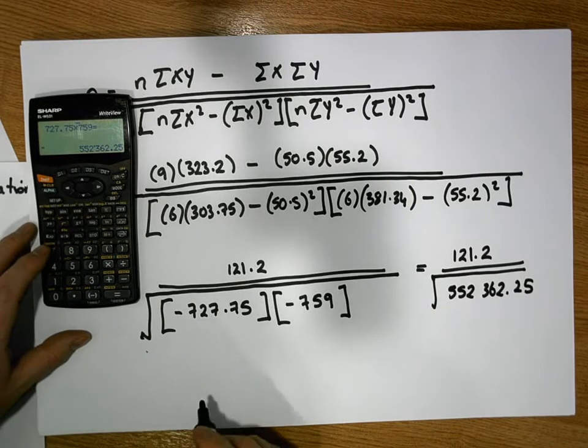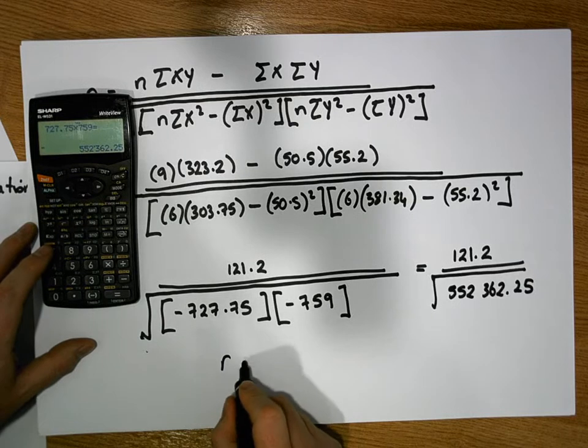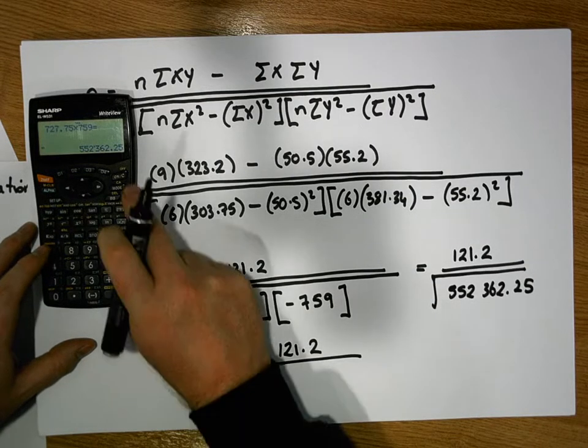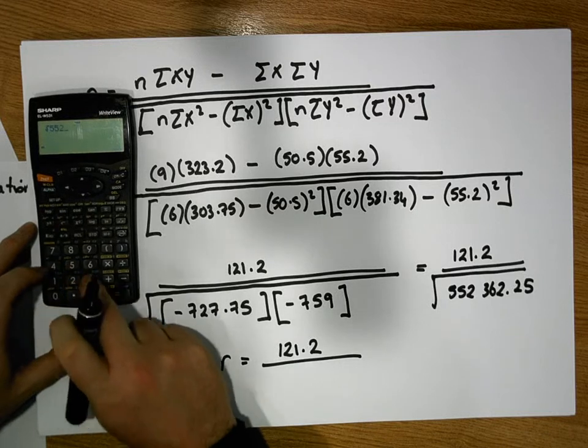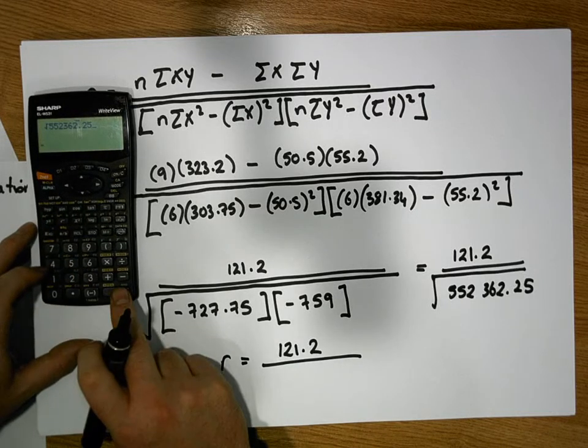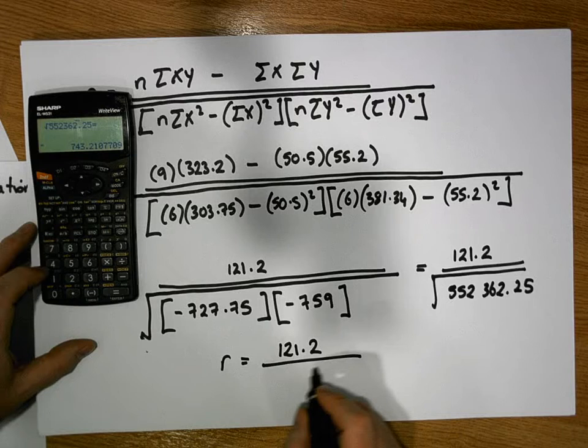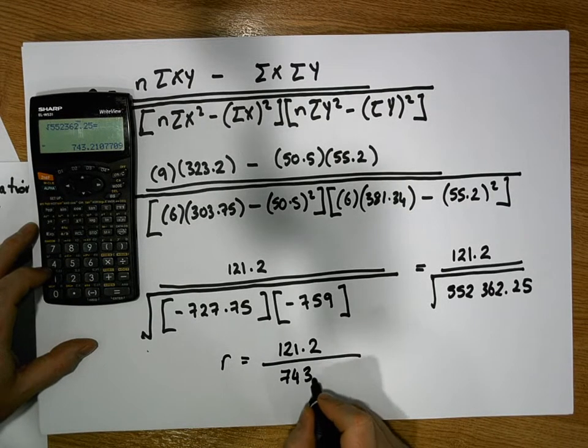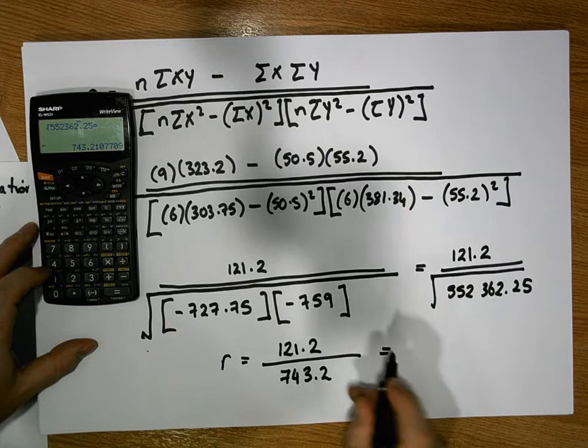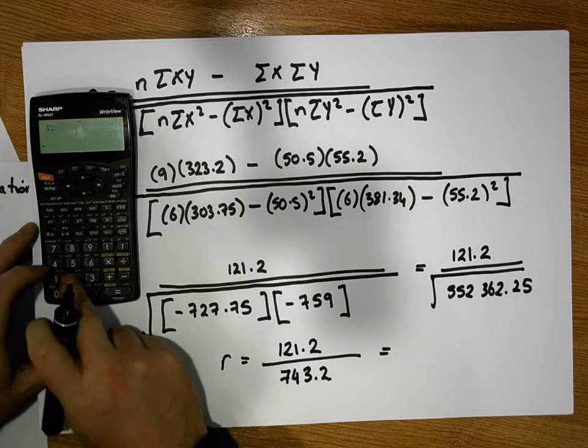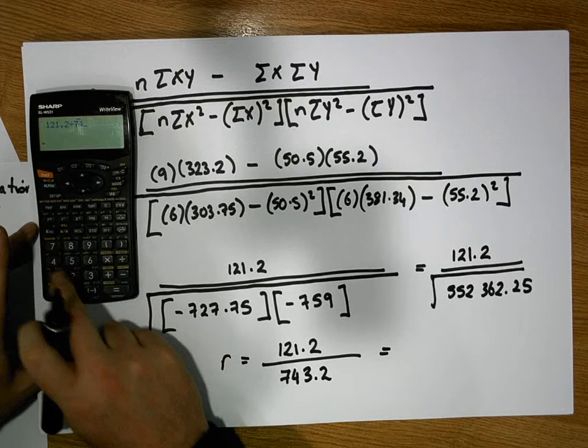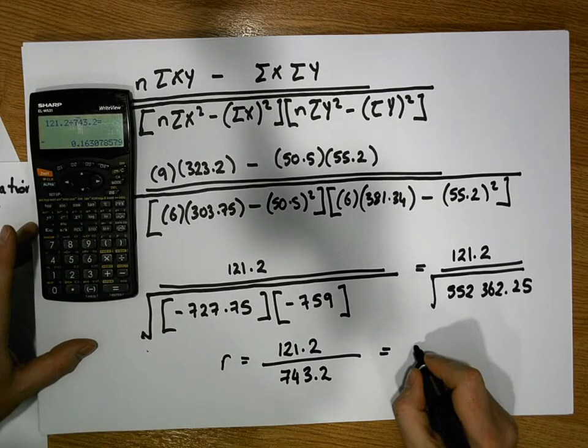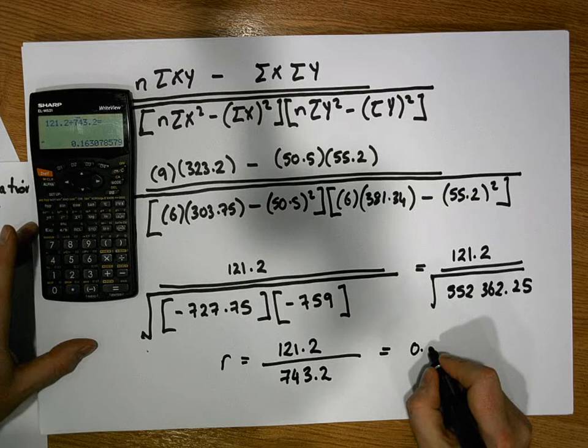And let's get the square root of that. So we end up with R equals 121.2 divided by the square root of 552,362.25 gives us a value of 743.2. When we do the division, we get 121.2 divided by 743.2, gives us a value of 0.16.